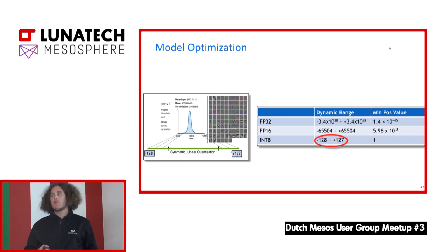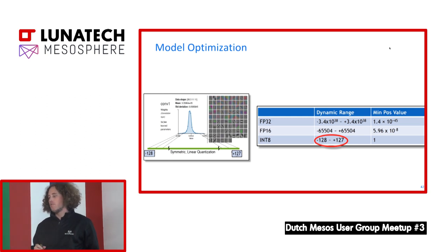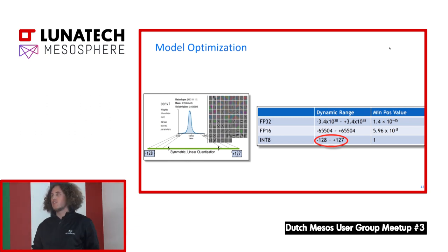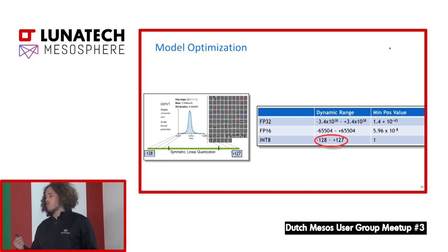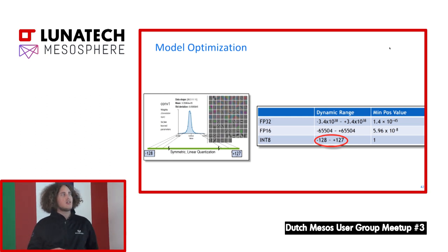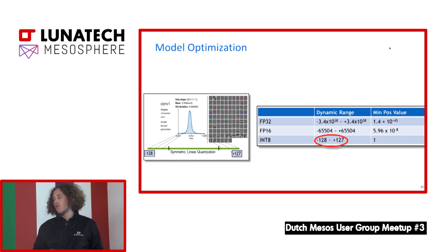Another typical optimization is value representation. During training you want high precision representation because errors accumulate over time. But at serving time, it's one pass through the network, so there's less space for errors to accumulate — you can reduce the precision of your weights and parameter representation. Google came up with their own floating point representations specifically for serving.